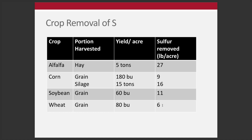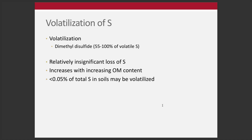Volatilization: dimethyl disulfide is the primary way that sulfur is volatilized. This is something to know, but we don't really do much to manage it. We don't prescribe, as an extension community, many ways to minimize this — it's just part of an ecosystem turning nutrients over. Volatilization is relatively insignificant and increases with increasing organic matter content.